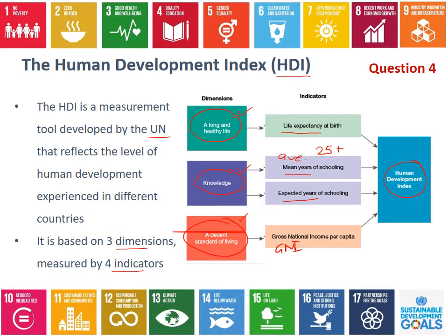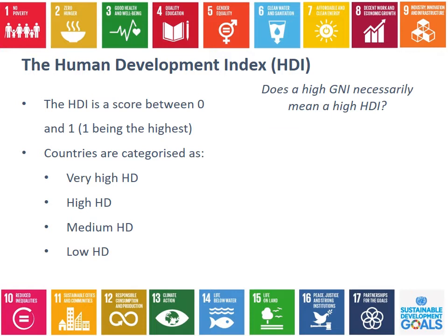The Human Development Index is given as a score between zero and one, so the absolute highest a country could achieve is 1.0. From each country's score, they can be categorized as very high, high, medium, or low human development — similar to how we classify countries by income as high, upper middle, lower middle, and low income.